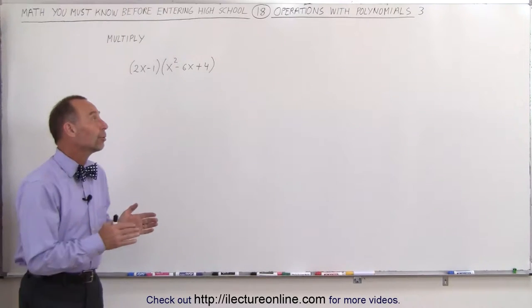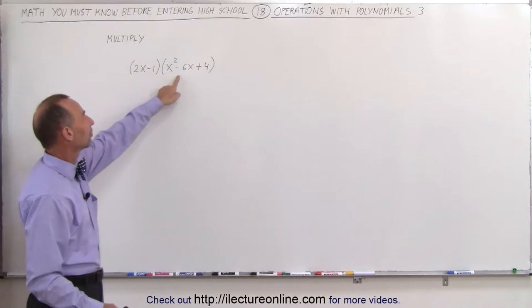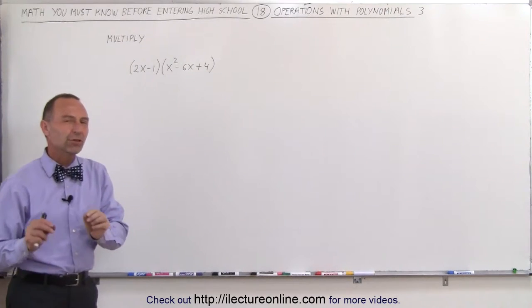Welcome to iLecture Online. Here we're going to multiply two polynomials. We have a binomial multiplied times a trinomial. We're going to do this in two different ways.